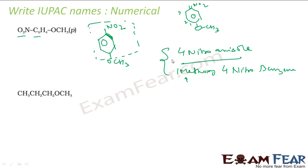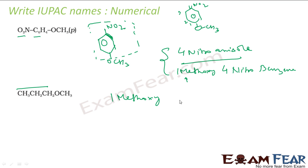Let's see this last one. This is my primary part — it has more carbons. At position one I have a methoxy group attached, and the total number of carbons is three — propane. So the name is 1-methoxypropane.